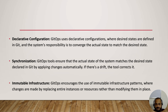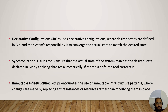GitOps tools ensure that the actual state of the system matches the desired state declared in Git by applying changes automatically. If there is a drift, the tool corrects it. The actual state is what your resources or infrastructure is currently running, the desired state is what you have defined in your repo, and GitOps always synchronizes the two.